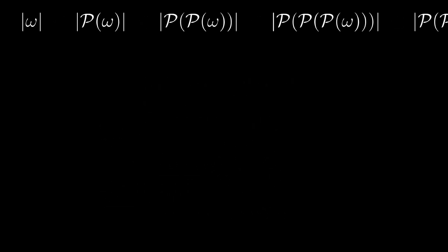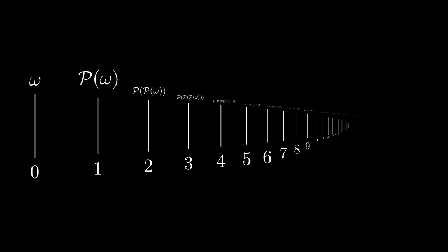Of course not, we have infinity. We can take all these sets omega, P omega, P P omega and so on at once and take their union. We can write this formally like this: the union of all the power sets applied i times to omega where i goes through all the natural numbers.